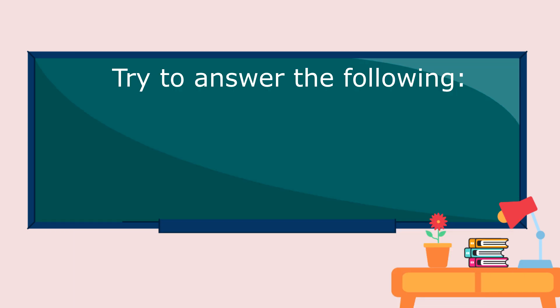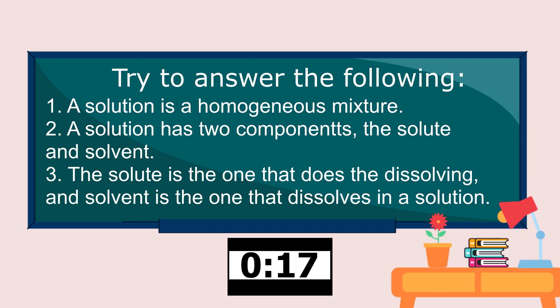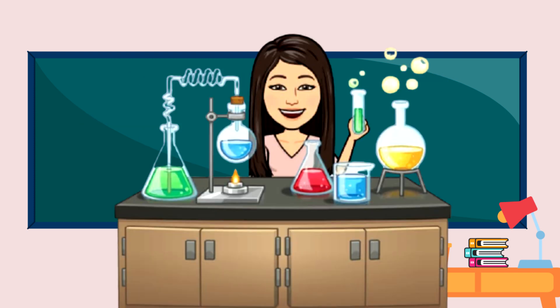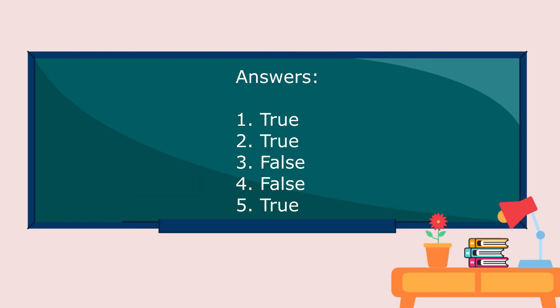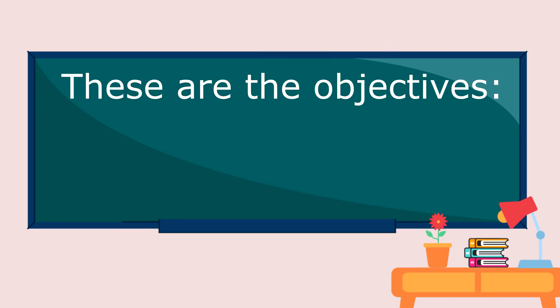So, get a paper and a pen and try to answer the following. Write true if the statement is true and false for an incorrect statement. Okay, let's check your answers! You all did it well! Alright, let us now proceed with our next lesson. These are the objectives.